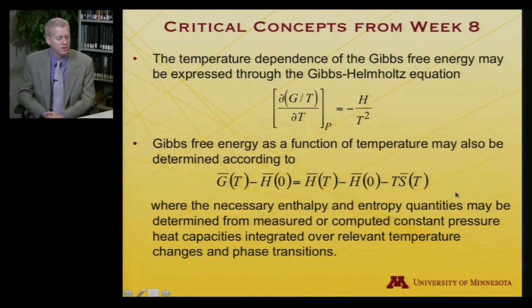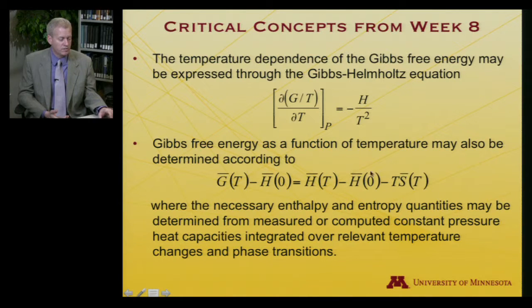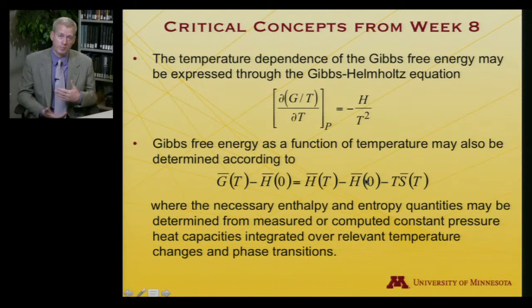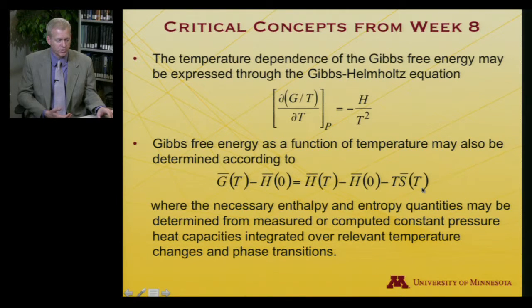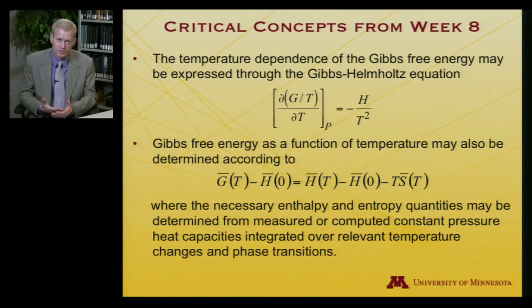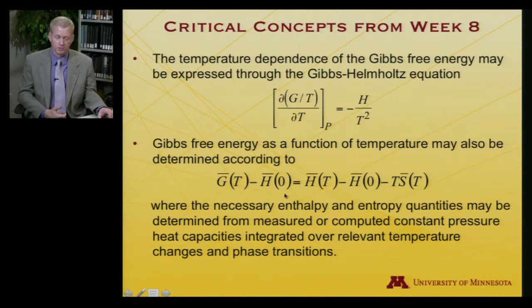The Gibbs free energy as a function of temperature can also be assembled from the enthalpy at a given temperature — evaluated relative to enthalpy at zero Kelvin by doing measurements of heat capacities — minus T times the third law entropy at a given temperature. That is evaluated from measurements of heat capacities at various temperatures, except what's being integrated is Cp over T instead of just Cp, as is true for enthalpy. Given those enthalpy and entropy quantities, we can always determine a free energy.